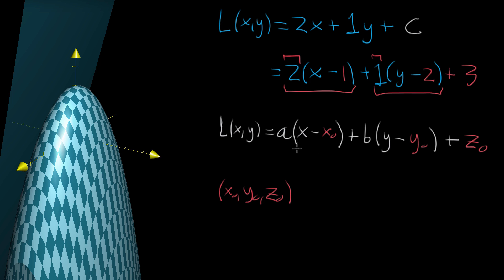Now this might seem like a lot with five different constants, but what it's really saying is: you want the partial derivative with respect to x to be some constant a, and the partial derivative with respect to y to be some other constant b. And you ensure the plane passes through (x₀, y₀, z₀) because plugging in x = x₀ makes the first term zero, and plugging in y = y₀ makes the second term zero, so the function evaluates to z₀ at that point.